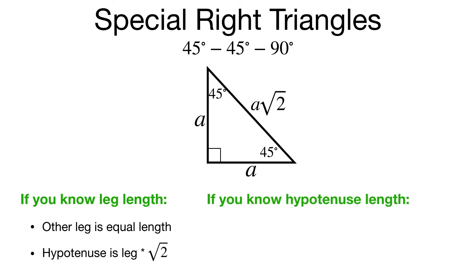If you know the hypotenuse length, you're going to be dividing by the square root of 2. And just be careful that you might have to rationalize that denominator. You can review that previous example we had. But don't forget to do that. That's basically it for the 45-45-90 special right triangle.